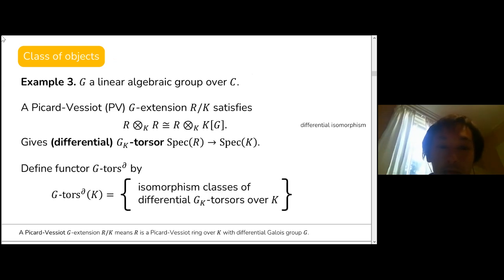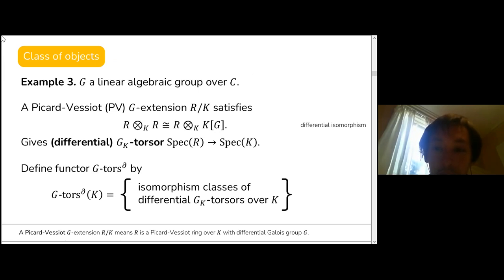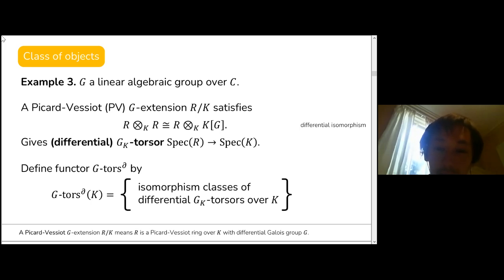Because the isomorphism here is actually a differential isomorphism — meaning it respects the derivation on the rings — we will say that this is a differential torsor. We want to study the collection of all these differential torsors over the fields, and we denote this functor by G-torsor with a del, where del is shorthand for the word differential. If you don't like the geometric language, you can just think of these as more or less Picard-Vessiot extensions.